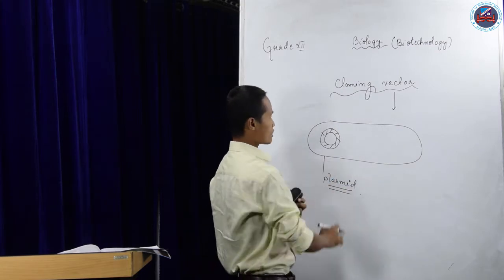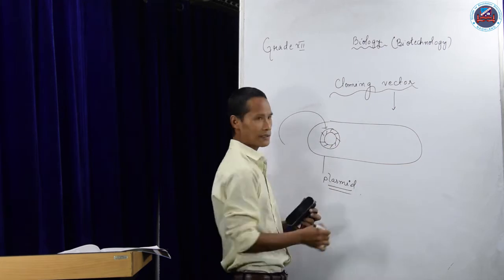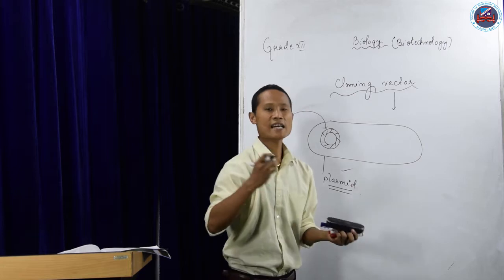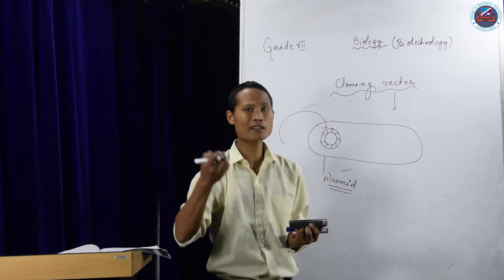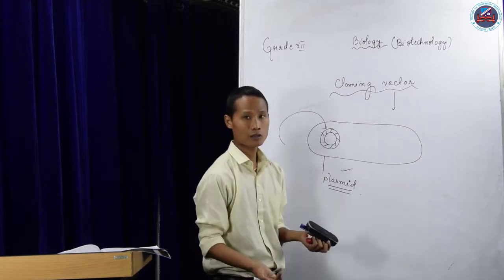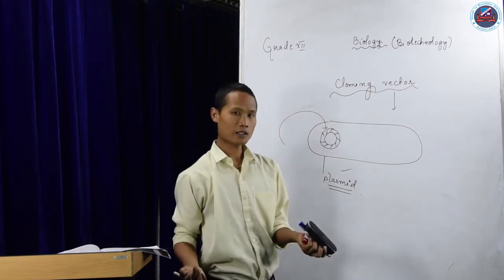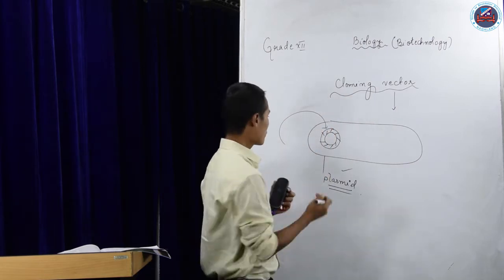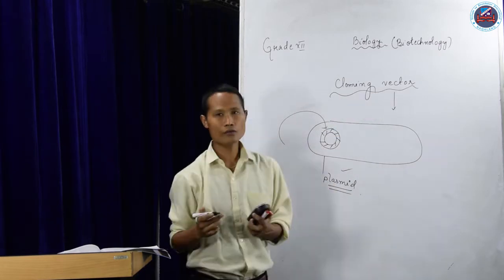When this vector was observed, the scientists thought: why don't we use this plasmid, which has the ability to replicate, which has the ability to multiply independently without the help of any organism? So if they can replicate independently, they tried to use it. They did research and found that this plasmid can be used as a cloning vector.